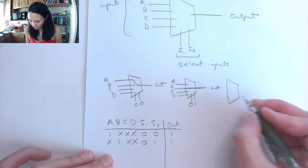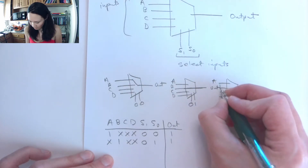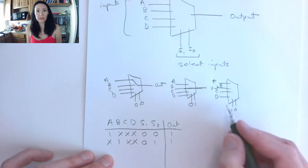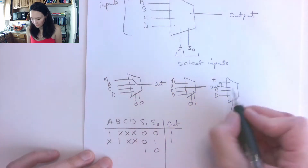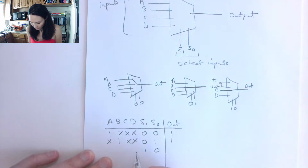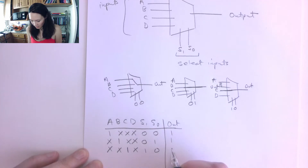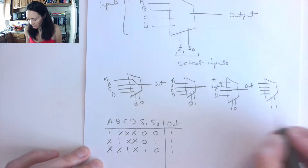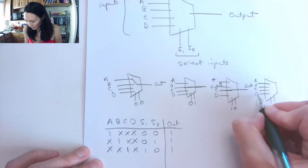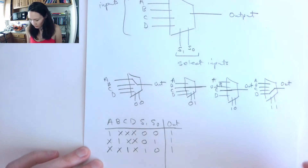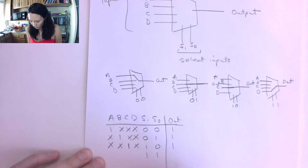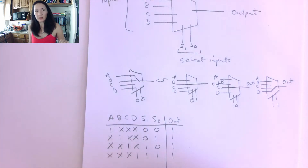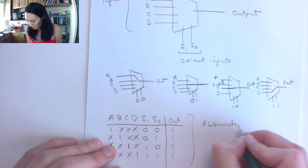The next case is with select lines S1=1, S0=0. This is going to select the C input and pipe that to the output. We don't care what's on D, B, or A; if C has a one coming in, then we have a one going out. Finally, the last case is when we have S1=1, S0=1 coming in on the select lines. This is where we pick our last data input D and pipe D to the output. We don't care what's on A, B, or C, but if D is a one, then our output will be a one.